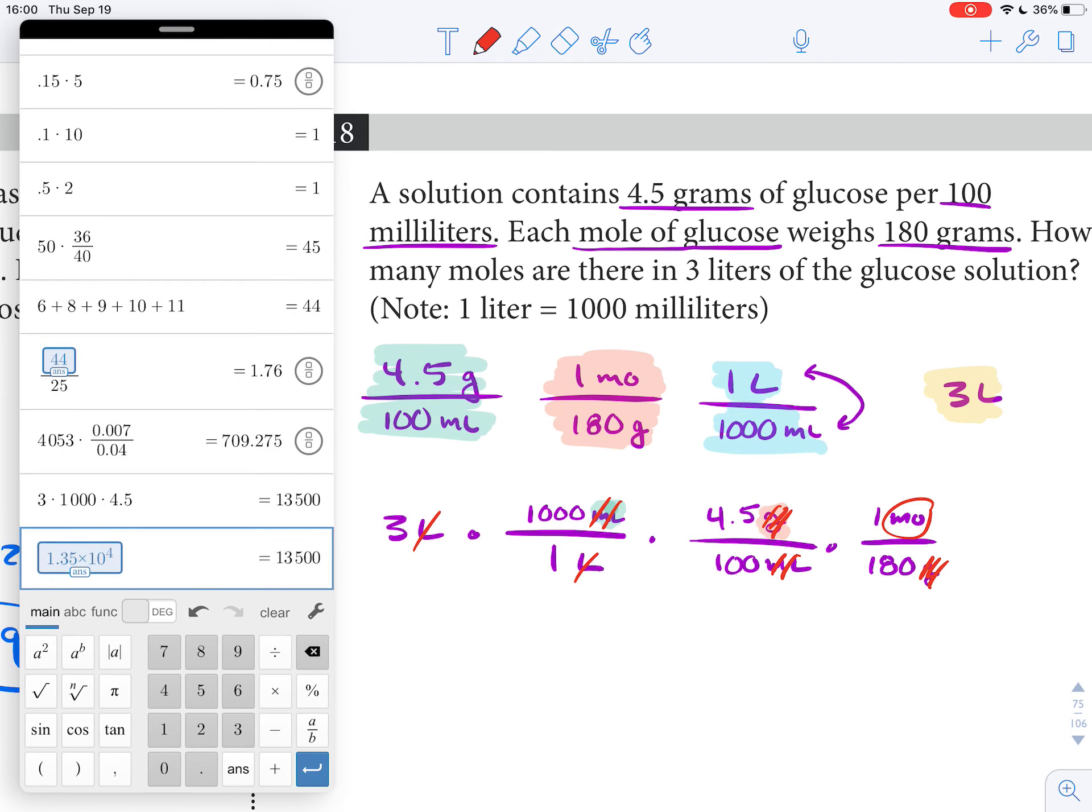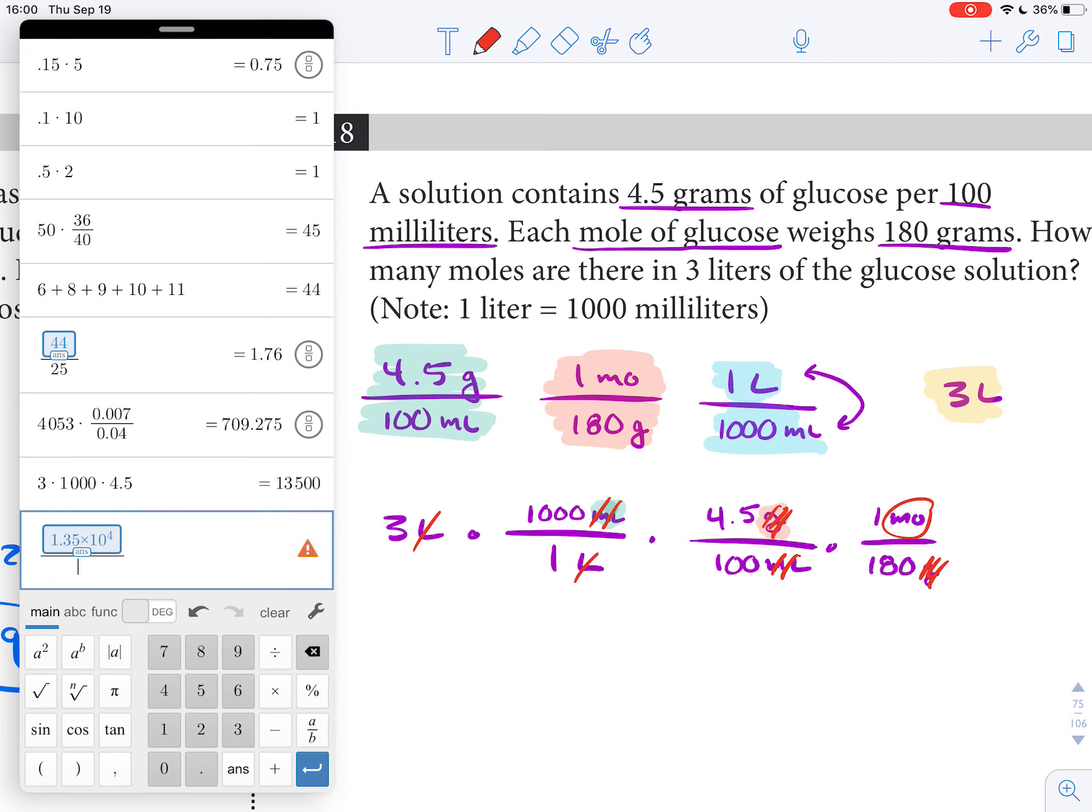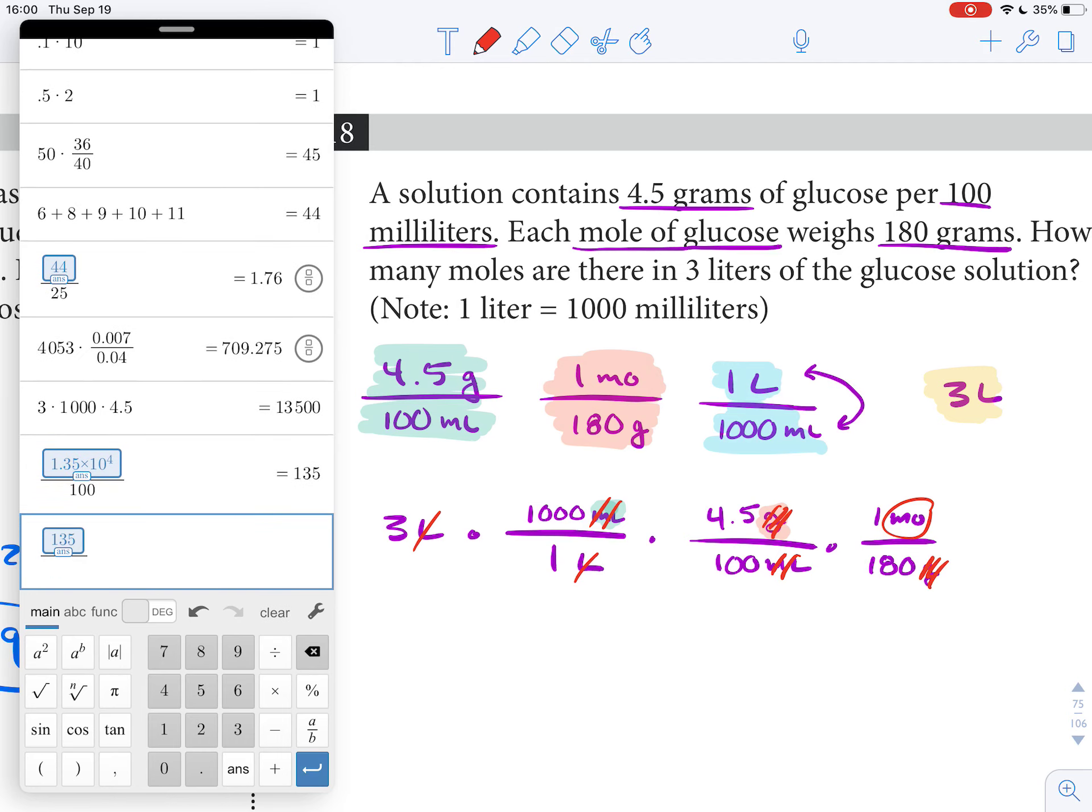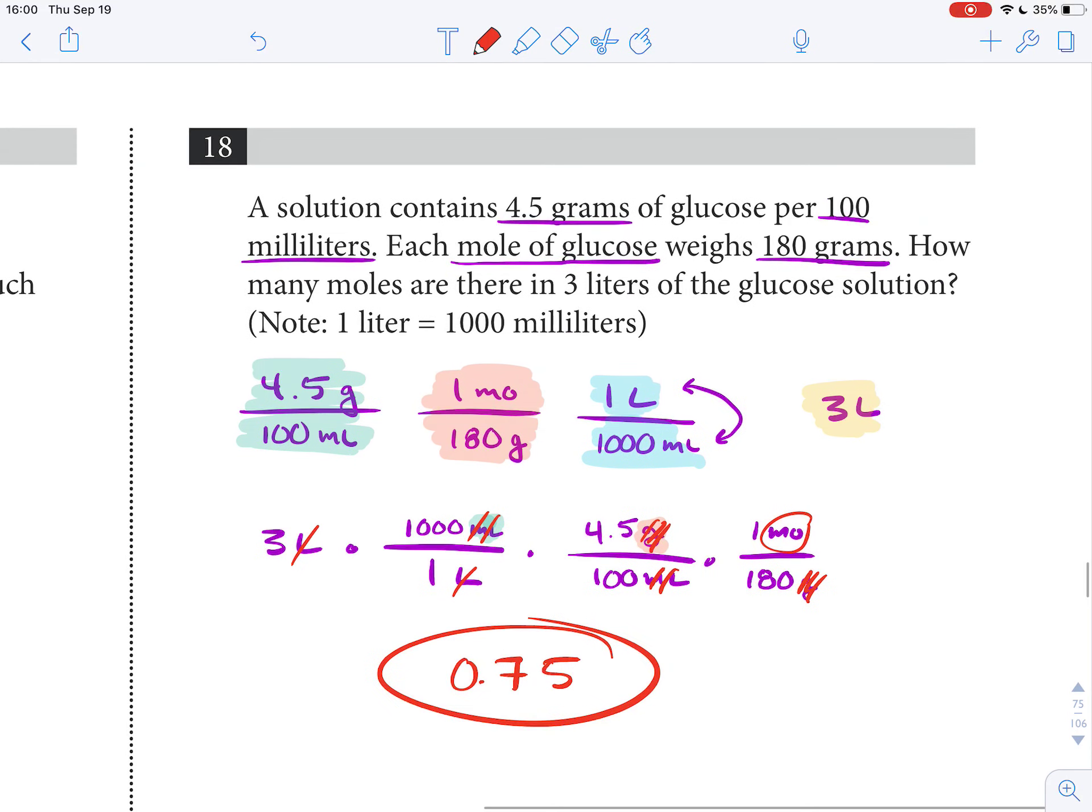We'll take that answer and we'll divide that by 100, and then we'll divide that by 180. We end up with 0.75 moles, and that's going to be it.